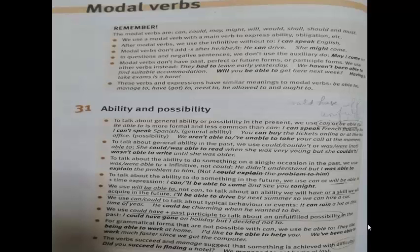Now let's move to ability and possibility verbs. To talk about general ability or possibility in the present, we use 'can' or 'be able to', like 'I can speak French' or 'we aren't able to take your call at the moment.'